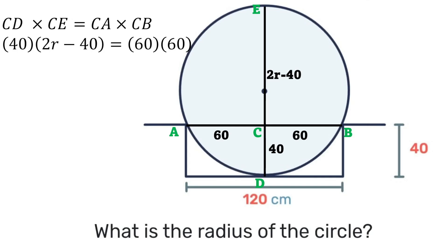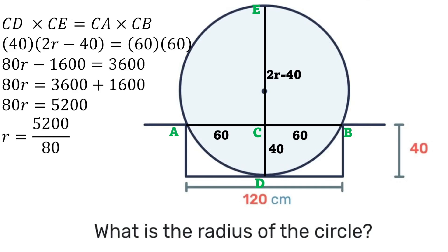Expanding brackets and simplifying we'll get 80R minus 1600 is equal to 3600. Transposing, 80R will be equal to 3600 plus 1600, which gives us 5200. So R will be 5200 divided by 80, which gives us that the answer is 65 centimeters.